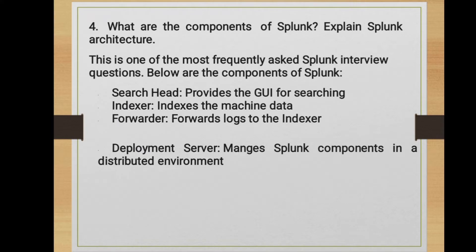What are the components of Splunk — explain Splunk architecture. This is one of the most frequently asked Splunk interview questions. The main components are: Search Head, Indexer, Forwarder, and Deployment Server. Since interviews are typically via voice or video call, just describe the components and their functionalities. The Search Head provides the GUI for searching; the Indexer indexes machine data; the Forwarder forwards logs to the Indexer; and the Deployment Server manages Splunk components in a distributed environment.